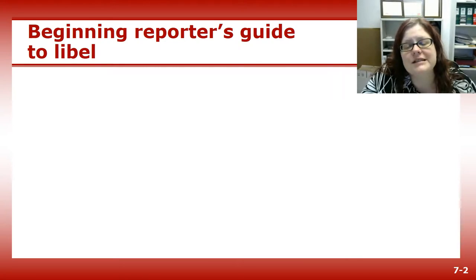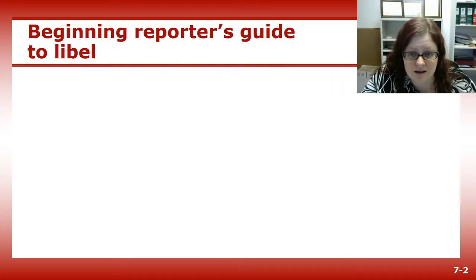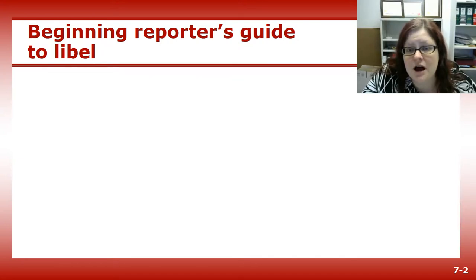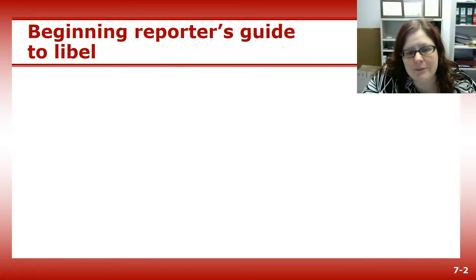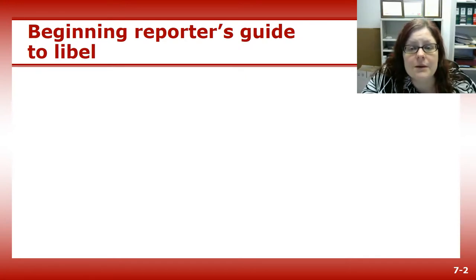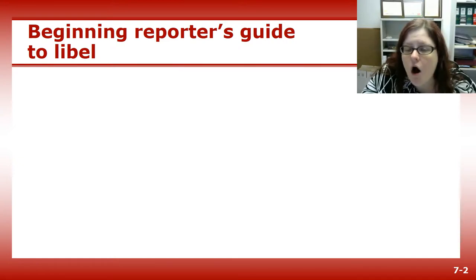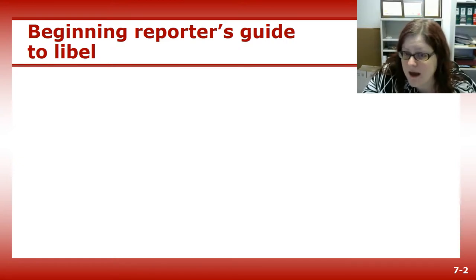All journalists need to understand libel law. Libel is the publication of a false statement that maliciously or carelessly damages someone's reputation. In order for something to be found libelous, all five of the following criteria must be met.